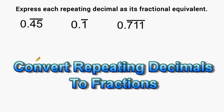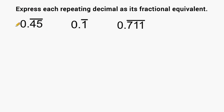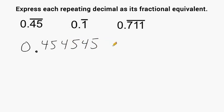What we're going to do in this tutorial is practice converting repeating decimals into their fraction equivalents. Let's take a look at this first example. We have zero point repeating four five. That means we have a value that is zero point four five, four five, four five, and that pattern continues to repeat. All repeating decimals represent some fractional value, so we're going to take this repeating decimal and express it as its fractional equivalent.